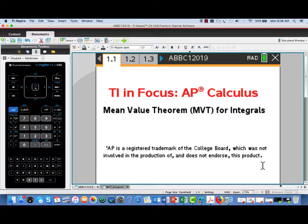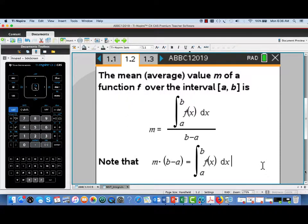To get started, let's review what the average value of a function is. So the mean or average value m of a function f over the interval a to b is given by m equal to the definite integral value from a to b of f of x dx over or divided by the interval length b minus a.